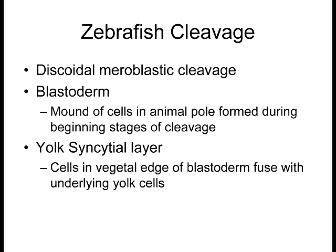Zebrafish cleavage is discoidal meroblastic — meroblastic meaning only part of the embryo undergoes cleavage. Actin filaments squeeze the animal pole to form a blastodisc where cleavage occurs, forming a mound of cells on the animal pole above the yolk. Nuclei just beneath where cleavage occurs form what we call the yolk syncytial layer. These nuclei surrounding the yolk syncytial layer are important in the development process.